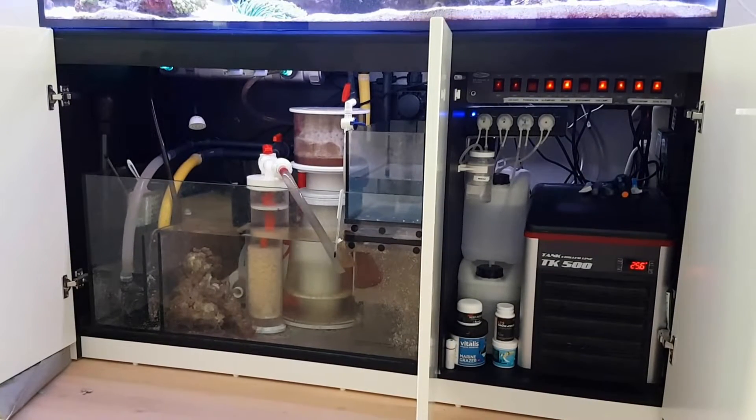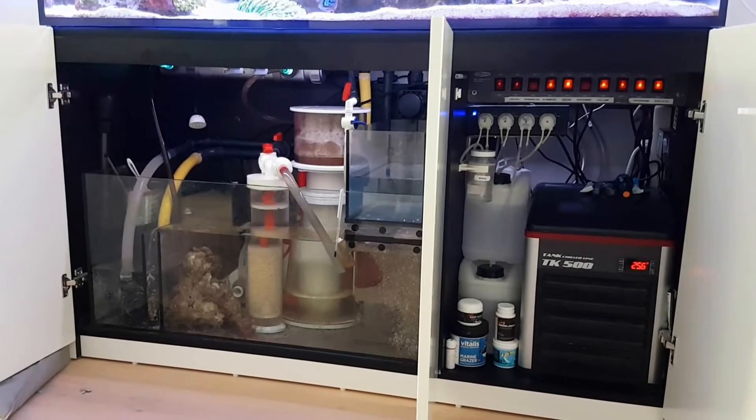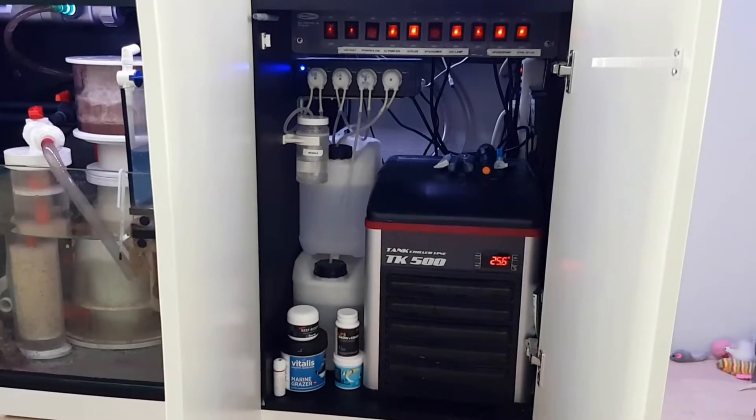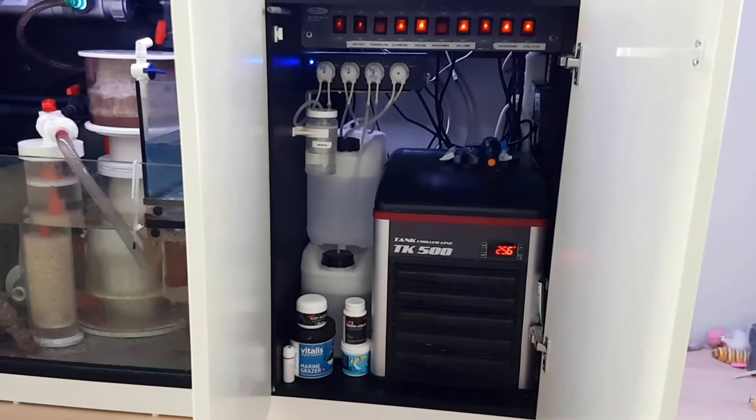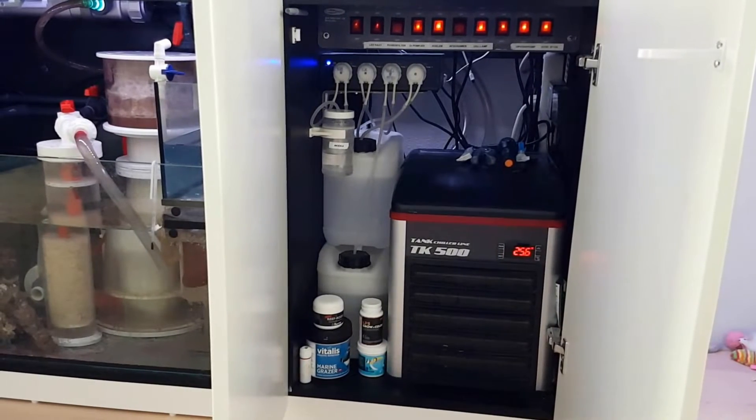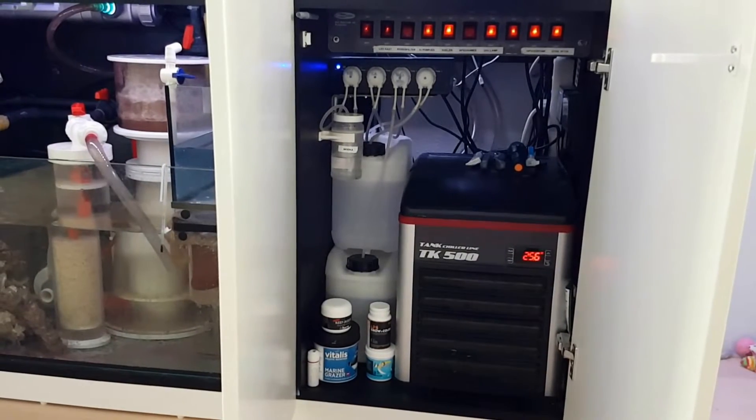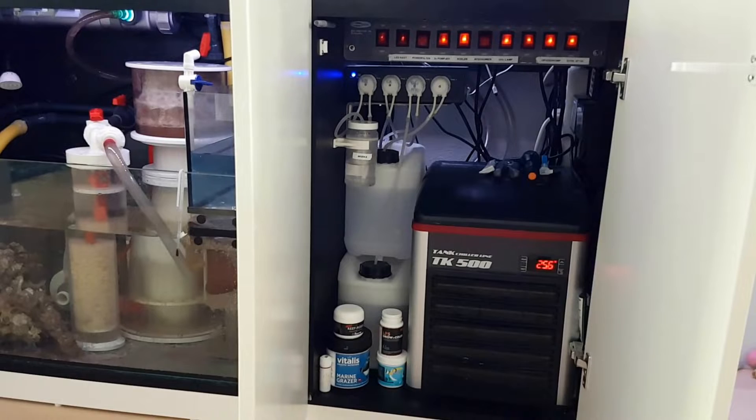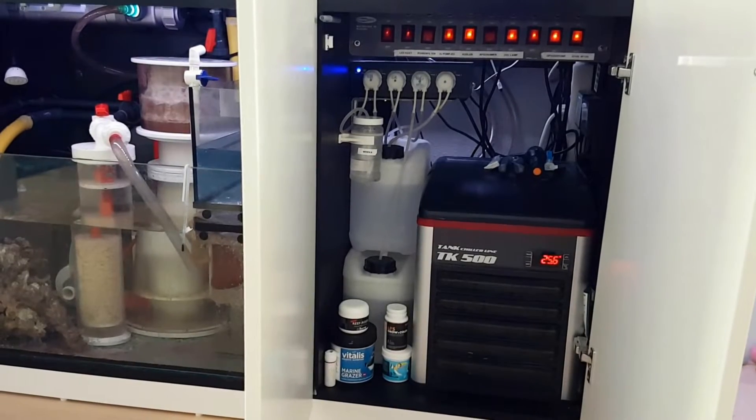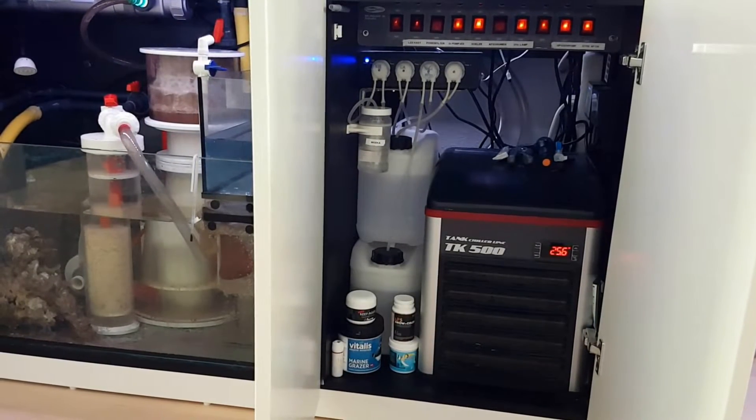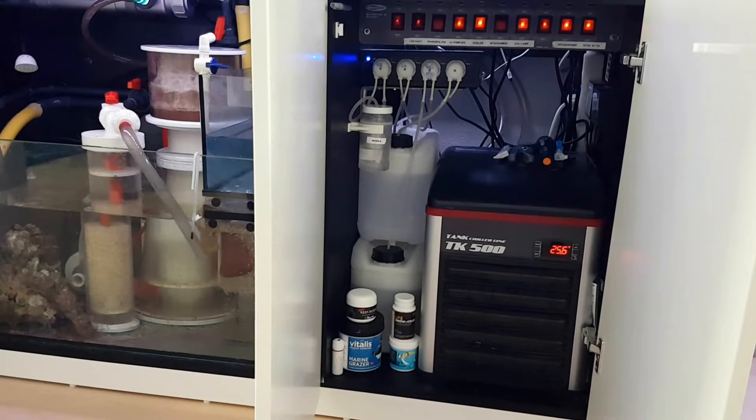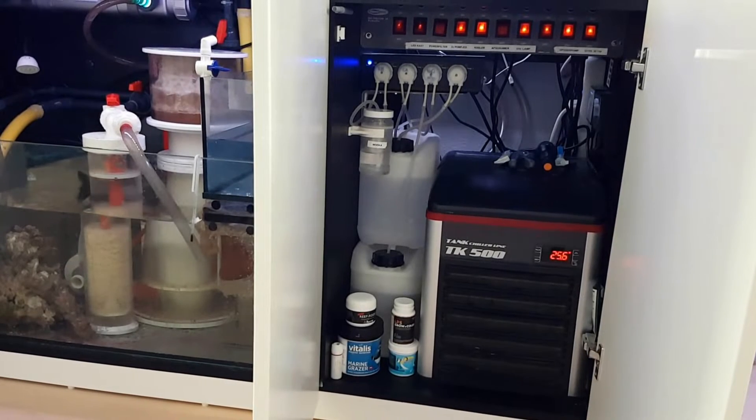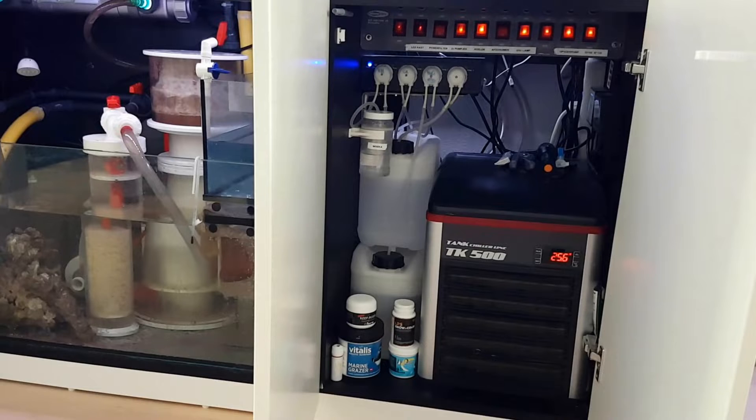I'm starting off with on the right side of the tank in the right cabinet. As you can see there's a chiller there which takes up most of the space in the right cabinet. It's a Teco TK 500, which is both cooling and heating tank. You can see the current temperature is 25.6 degrees, which is okay. As soon as it drops below 25.5 it will start heating and as soon as it reaches 26 it will start cooling the tank to 25, so 25 is the offset.